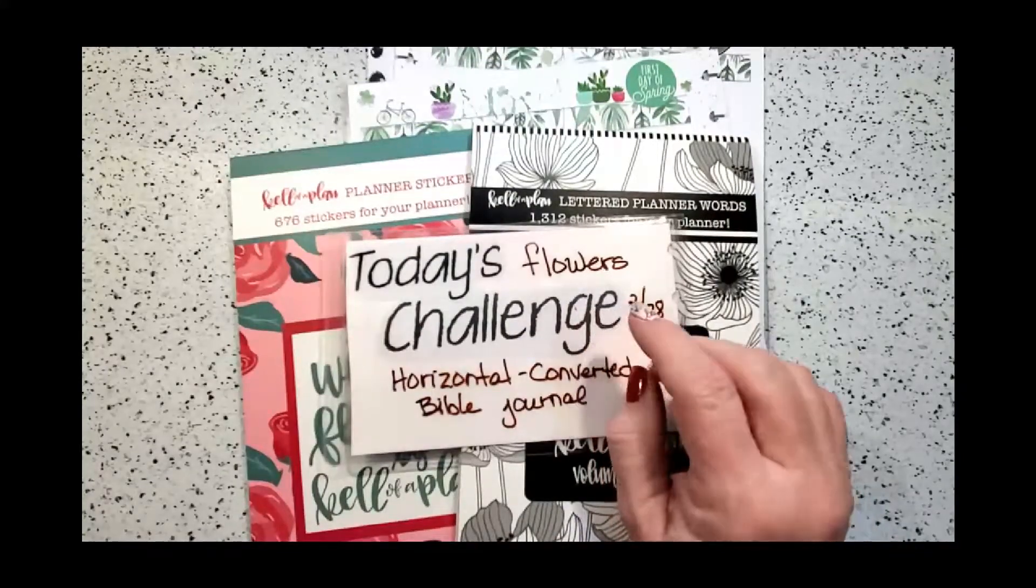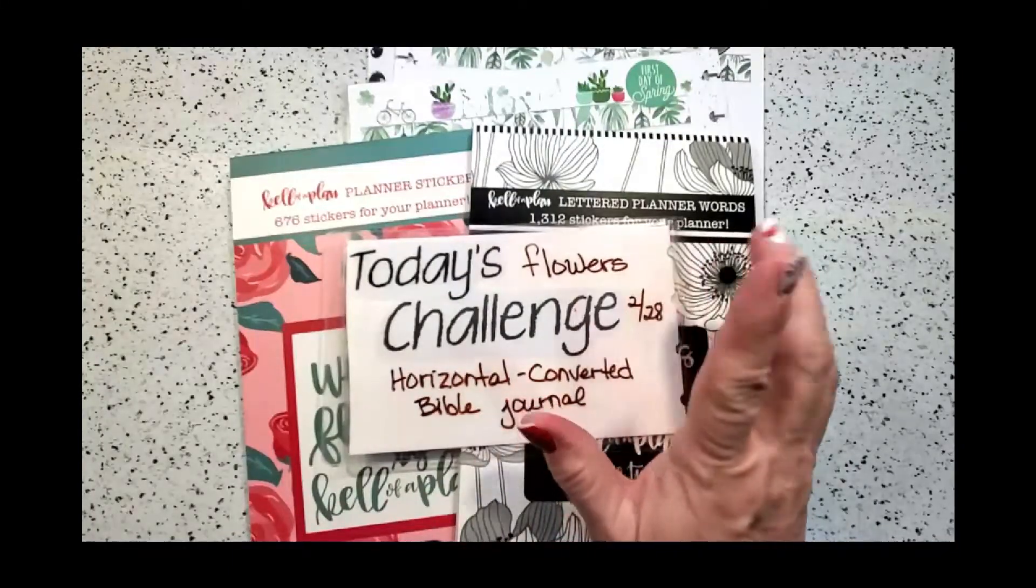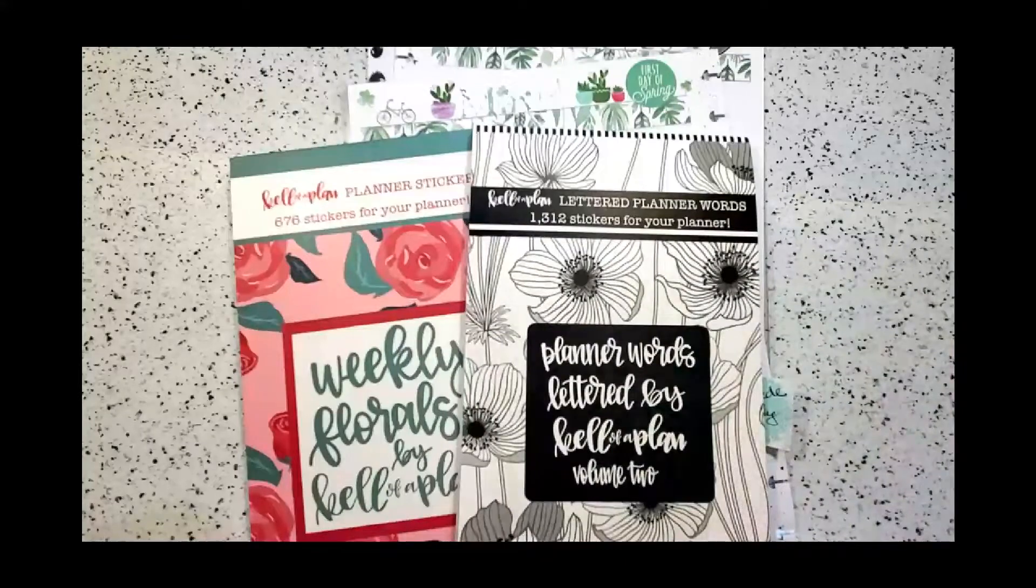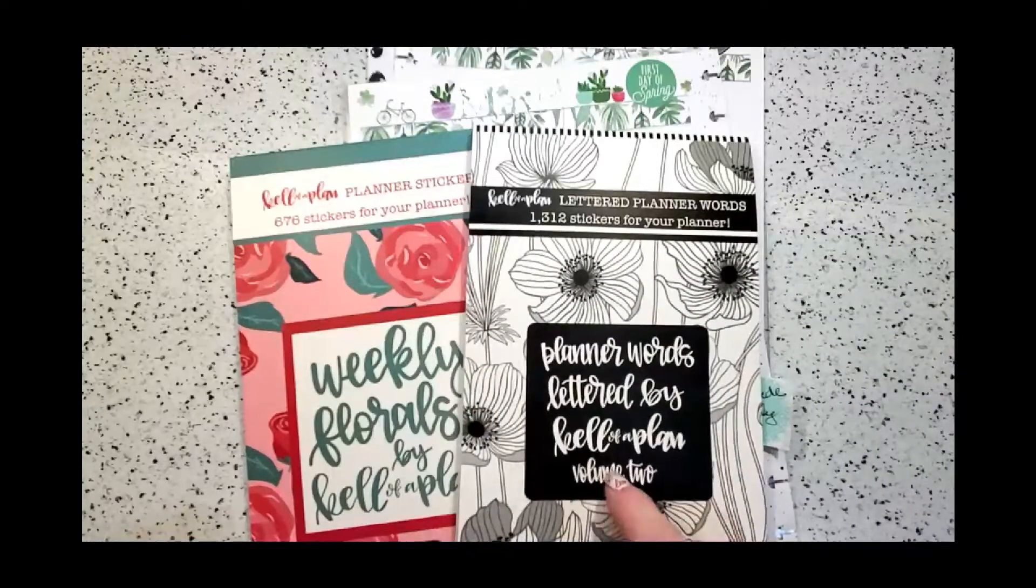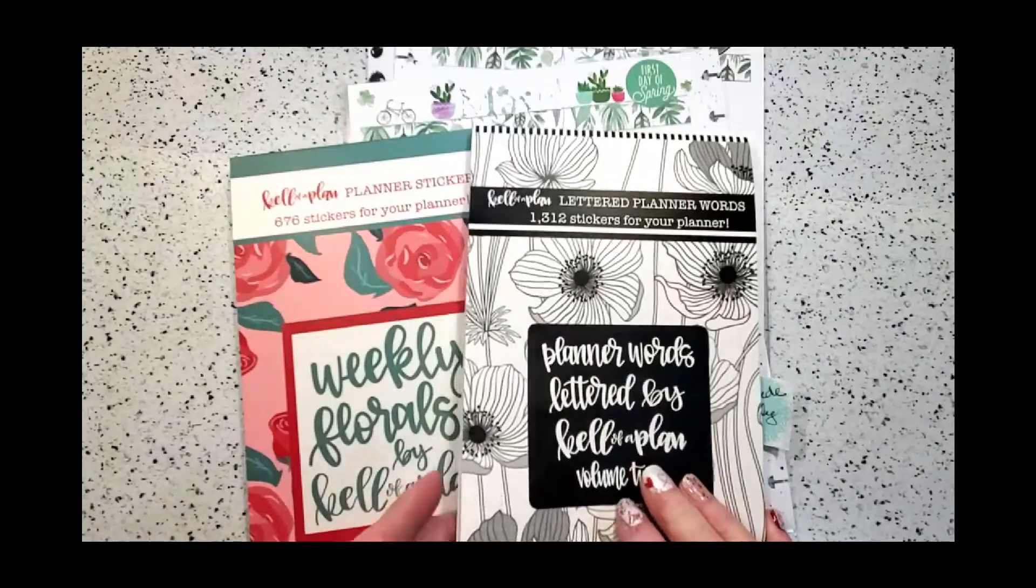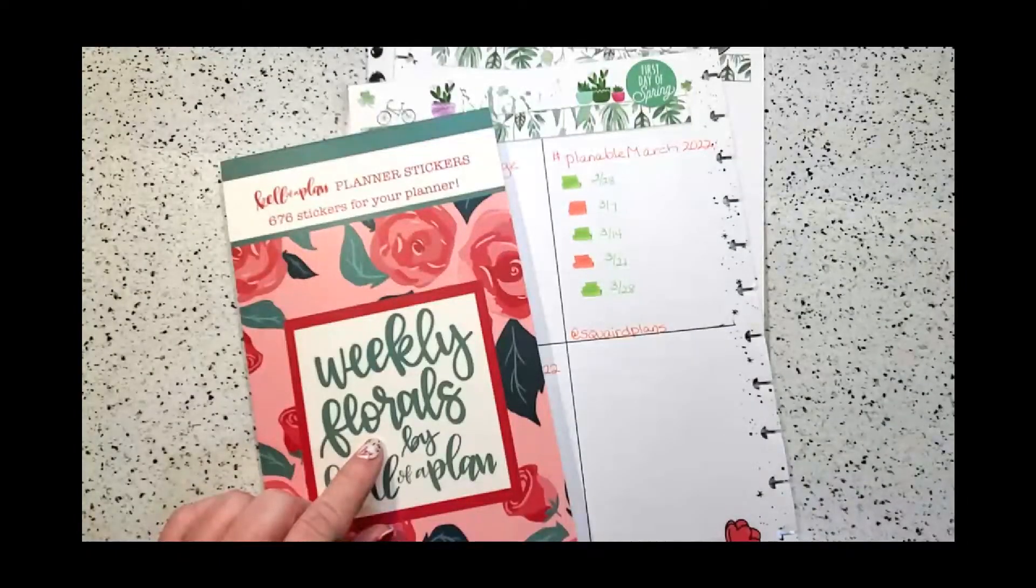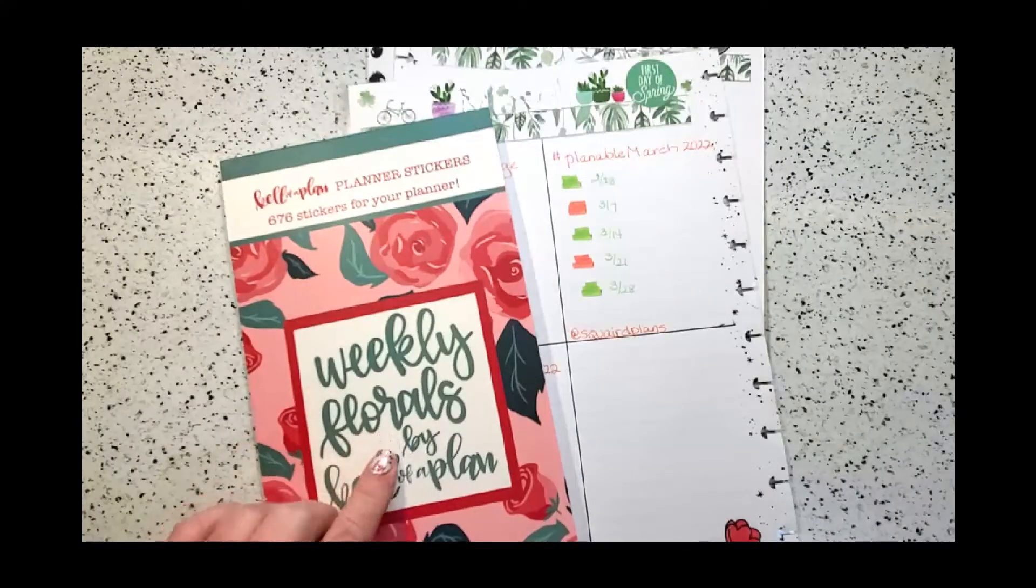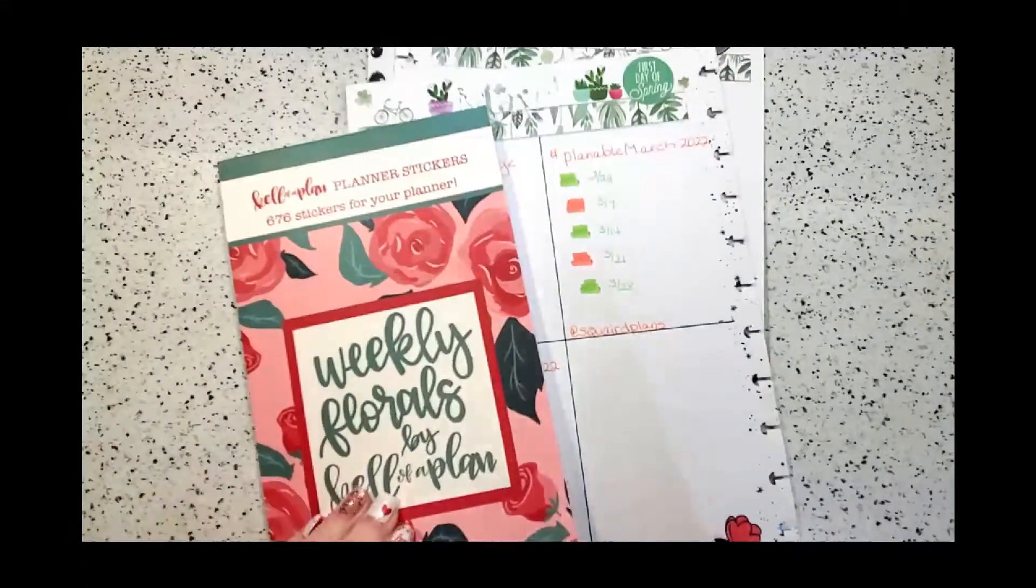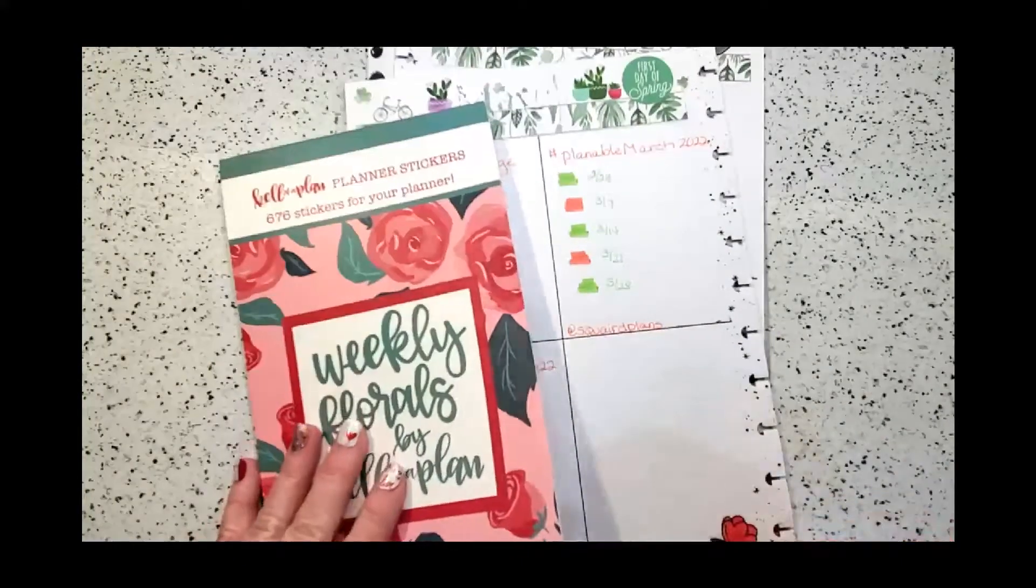Because this planner, 52 weeks and 12 months, will be flowers. So we're going to get started. I'm using Kella the Plan stickers for the monthly stickers, and I am using the weekly florals in here because she had some really good ones. It was really hard for me to decide for this week.